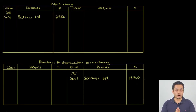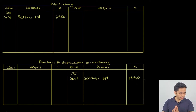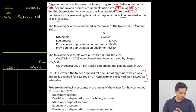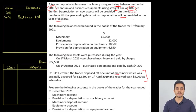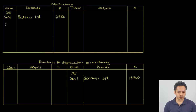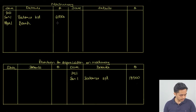We will now record the purchases of new assets for machinery. On 1st March, machinery purchased was 22,500 and the payment was done by cheque. This would be recorded on the debit side of the machinery account on 1st March — details: bank, amount 22,500.